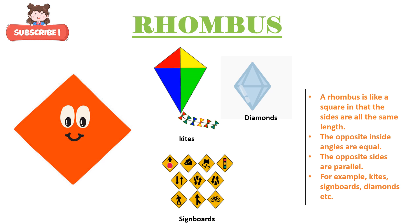Now let's learn the properties of rhombus. A rhombus is like a square, which means all the sides are of the same length. The opposite inside angles are equal and the opposite sides are parallel. For example, kites, signboards, diamonds, etc.